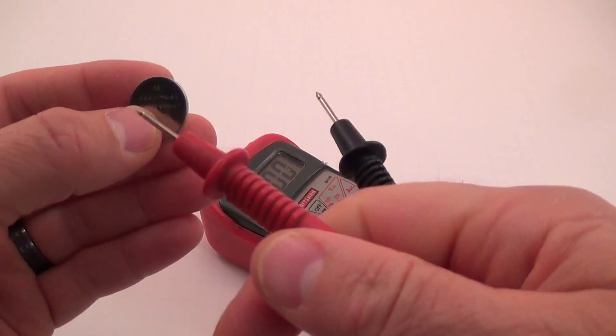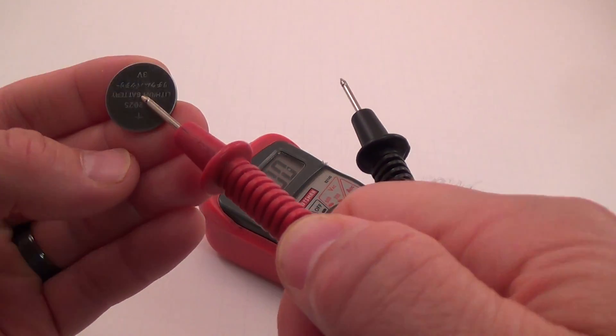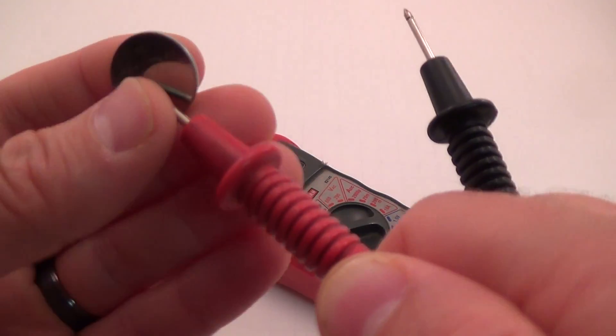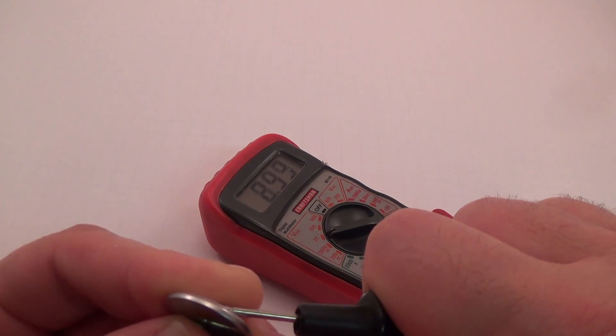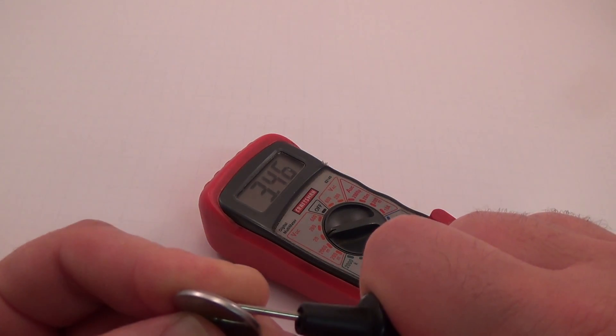You just take one lead and I believe that's the positive. Yeah, the positive is on top. It doesn't really matter, you can hook it up either way really. I'll just show you a negative value if you hook them up wrong. And we're getting 3.46 volts, so you know the battery is good.